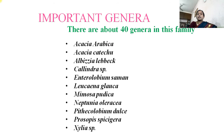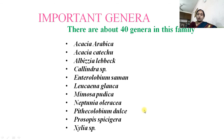Important genera: there are about 40 genera in this family. Some of them are Acacia arabica, Acacia catechu, Albizia, Calliandra, Enterolobium, Leucaena, Mimosa pudica, Neptunia oleracea, Pithecellobium dulce, Prosopis, and Xylia. These are some of the plants included in the family Mimosaceae.